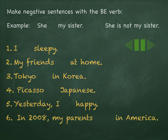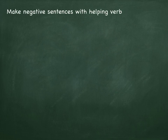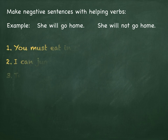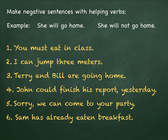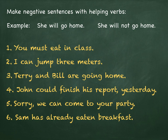Now you need to do the same thing with sentences with the helping verbs. There are no spaces in these sentences, so you must choose where to write the word not. Pause the video. And now here are the correct forms. Number one: you must not eat in class. I cannot jump three meters. Terry and Bill are not going home. John could not finish his report yesterday. Sorry, we cannot come to your party. Sam hasn't eaten breakfast yet.